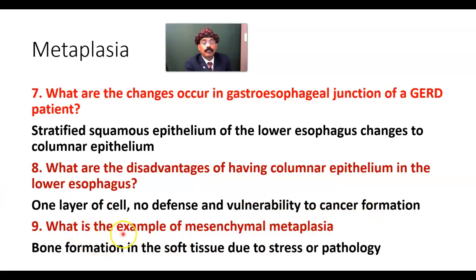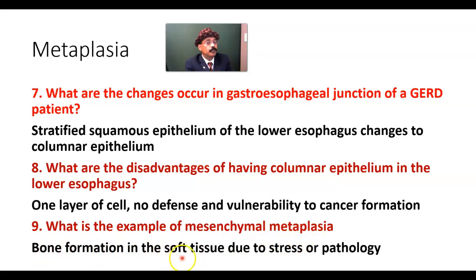What is an example of mesenchymal metaplasia? Bone formation in the soft tissue due to stress or pathology is an example of mesenchymal metaplasia.